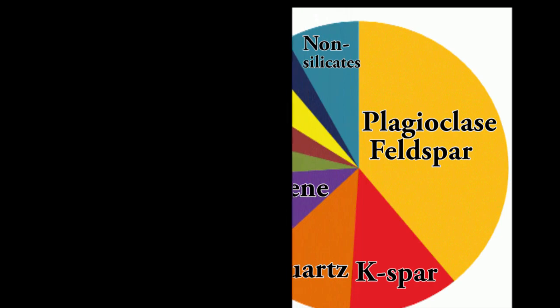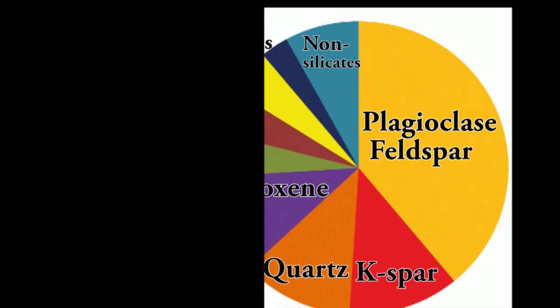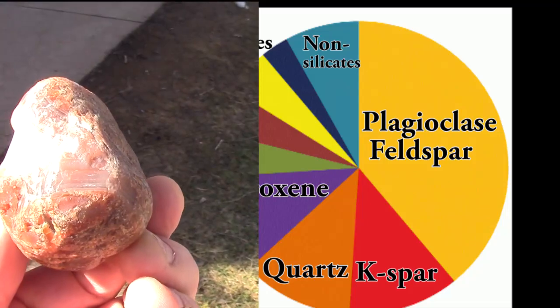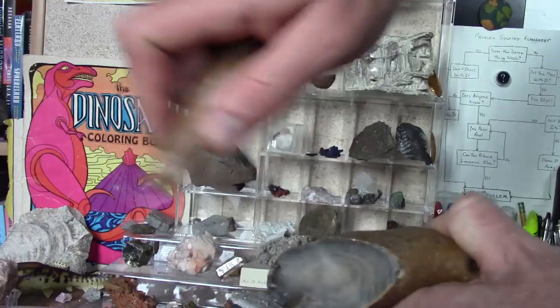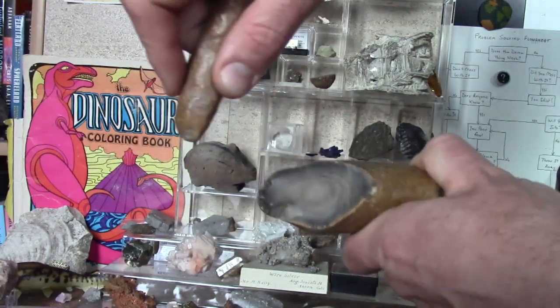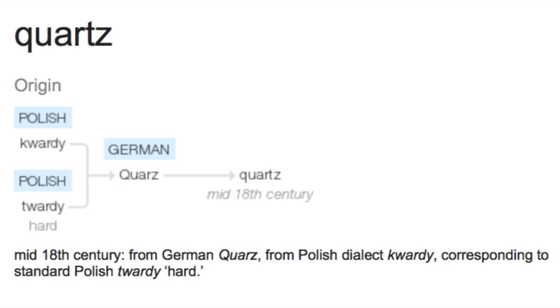With feldspars accounting for half of the Earth's crust, another quarter of the Earth's crust is made up of the mineral quartz. Though I like the idea that the name quartz comes from the sound you get when you hit flints or chert pebbles together, it looks like it comes from the Polish 'twardy', meaning hard, which transformed into the Polish 'kwarty', which gave the German 'kwars', which we get quartz.